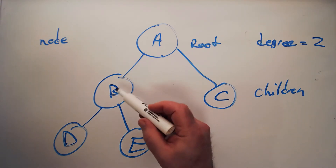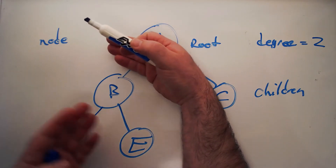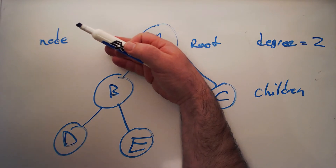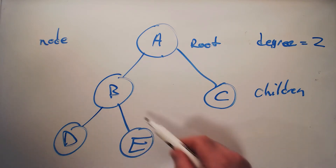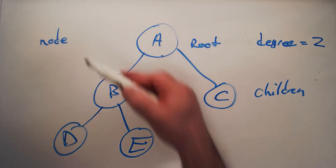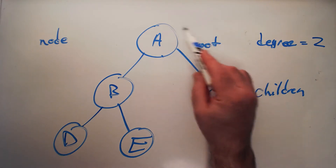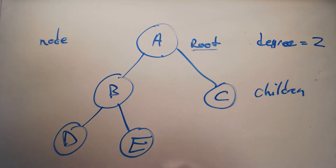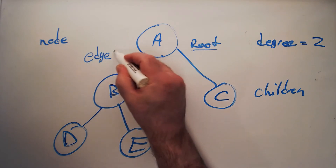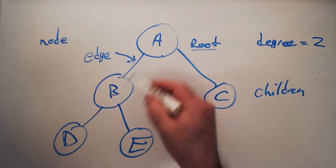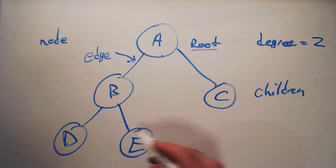Sometimes you'll see the B, D, and E portion of this tree referred to as a subtree — you would say that B is the root of this subtree, and A might be the parent of a subtree whose root is B. The root has no parent; that's what defines it as the root. The lines that connect nodes together are called edges, which are like the links in a linked list.